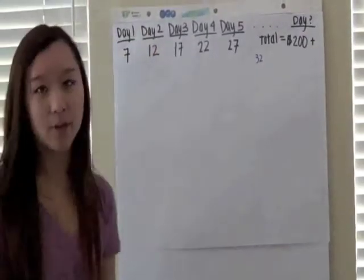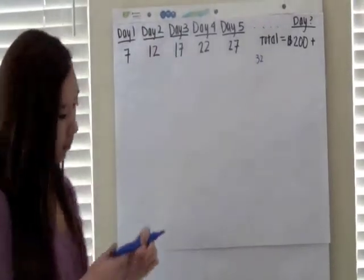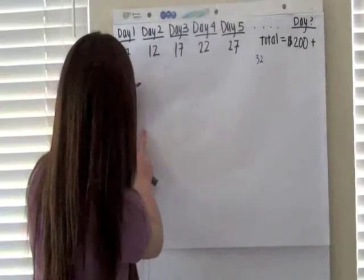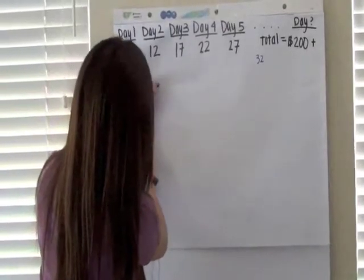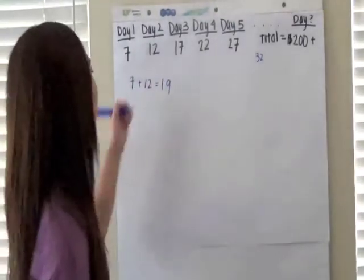So the second step of this problem is to add the numbers that you get up until you get more than 200. So 7 plus 12 you get is 19. 19 is not 200 or more. So you keep adding.